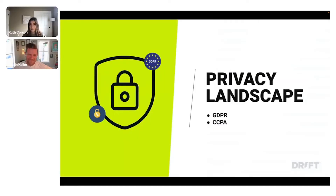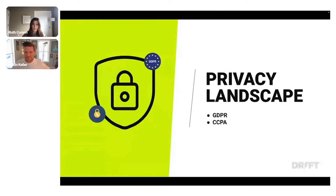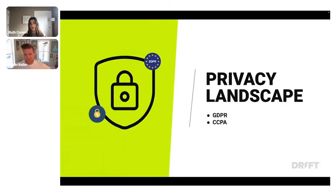Looking at the privacy landscape, with GDPR, data protection authorities across the EU are now aligning toward the goal of digital sovereignty in Europe through enhanced enforcement of data protection. When you're on a website you'll often see that shield banner or lock button to meet those GDPR requirements. This is also growing — Brazil has entered and it will probably continue to expand.